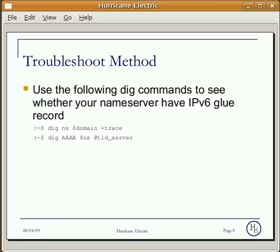Let's go over the troubleshooting method. Use the following dig command to see whether your name server has the IPv6 glue record or not. Before you use the command, replace the dollar sign variables with your values. You will get the proper answers if you have correctly configured the IPv6 glue.